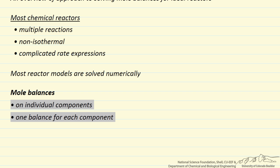So if I have species A, B, and C, I'll write down a mole balance for A, another mole balance for B, and another mole balance for C. That is, we're writing one balance for each component.